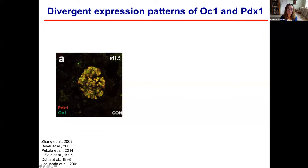This story begins with two transcription factors that my lab and many others have been studying for many years. I started working on PDX1 as a postdoctoral fellow in Chris Wright's lab at Vanderbilt, and then started working on OC1 and took that project with me when I started my own lab. These two transcription factors are very well known in their role in pancreas development. In the very early pancreatic bud at embryonic day 11.5, cells labeled for both PDX1 and OC1 are called multipotent pancreatic progenitor cells, and they can give rise to any cell type in the mature pancreas.